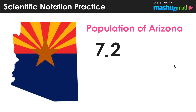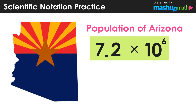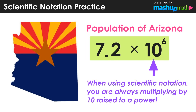But what about all of those zeros? Scientific notation allows us to replace those zeros with multiplying by the value of 10 raised to a power. In this example, the power is 6, which represented the total number of place values we moved the original decimal point. And we should note that whenever we are using scientific notation, we are multiplying by the value of 10 raised to a power — there will never be a different value other than 10 in that spot.